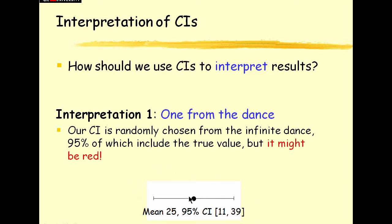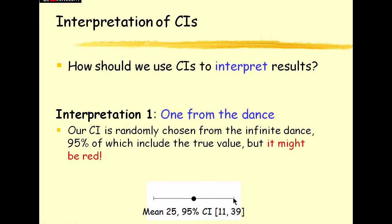Well our confidence interval comes from a dance and how frenetic is this dance? How wide is the jumping around of successive means in this dance? Well the extent of the confidence interval gives us some idea of how extreme, how wide this dance is.